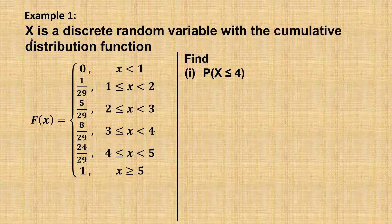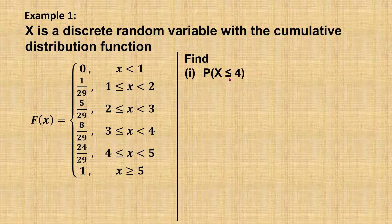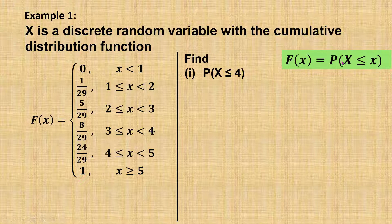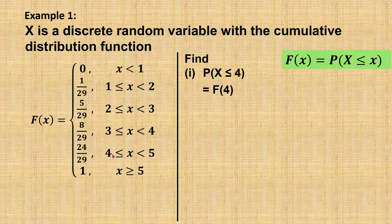First example: x is a discrete random variable with the cumulative distribution function given below. Find the probability x less than or equal to 4. We have learned that the cumulative distribution function F(x) equals the probability of X less than or equal to x. So we need to find F(x) when x is equal to 4. From this cumulative distribution function, F(x) when x equals 4 is 24 over 29.